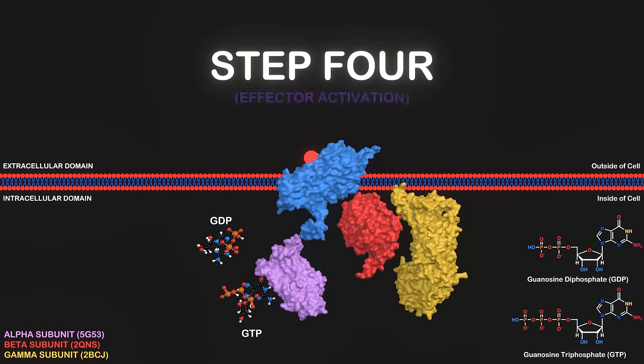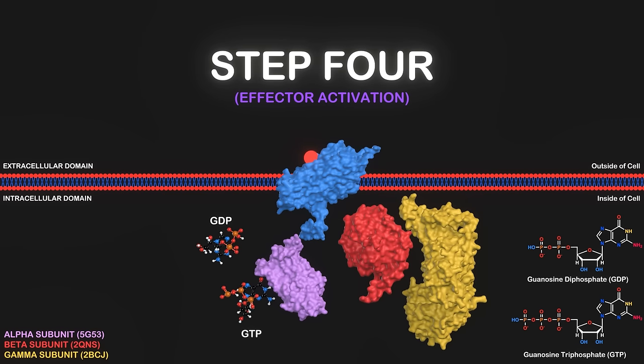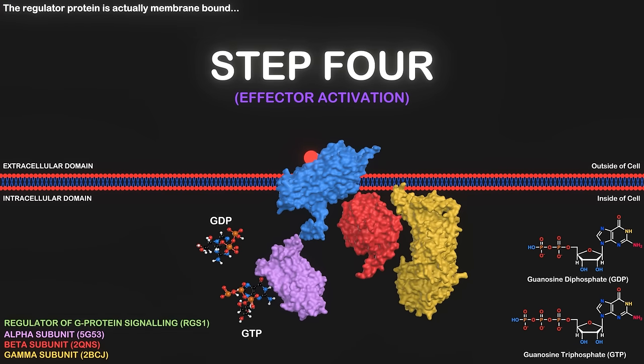The fourth step is effector activation. The GTP-bound alpha subunit and the beta-gamma subunits can now independently regulate various intracellular effector molecules such as enzymes or ion channels. This just means that the GPCR is able to interact with other parts of the cell as a consequence of the interaction with the neurotransmitter or other molecules. These effectors mediate the transmission of the signal initiated by the ligand binding to the G-protein coupled receptor.